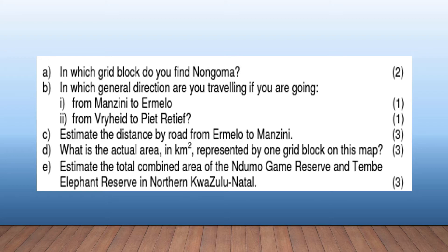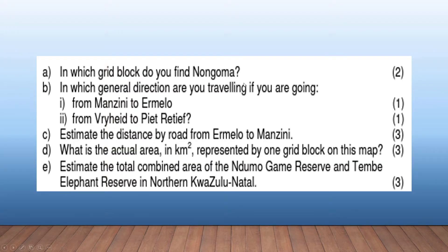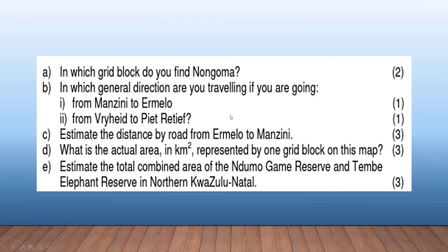Let's look at some of the questions they can ask. They could ask: in which grid block do you find Nongoma? That's two marks — a mark for the row and the column, sort of like Microsoft Excel. The answer would be C3. In which general direction are you traveling if going from Manzini to Ermelo? That's a westerly direction. From Vryheid to Piet Retief? Traveling straight up — a northerly direction.